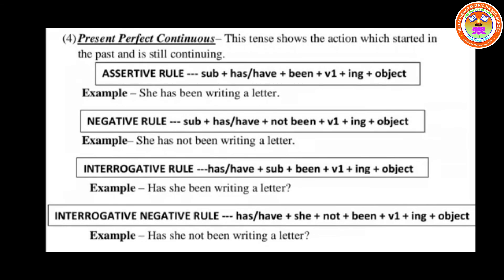Next we go to present perfect continuous. From the word itself, you can understand the action is still continuing. This tense shows an action that started in the past and is still going on. For the assertive affirmative form: Subject + has/have + been + V1 in ING form + object. In present perfect we used V3, but here we use V1 in ING form. Example: 'She has been writing a letter.'